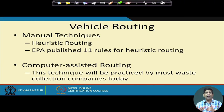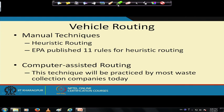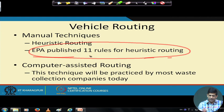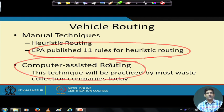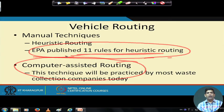In terms of vehicle routing, there is a manual way — heuristic routing. The US EPA published 11 rules for heuristic routing covering how trucks should move around. Over the last few decades, people have taken these guidelines and developed computer software, so nowadays nobody actually does manual routing. Computer-assisted software takes into account all 11 rules along with operations research, linear programming, and other concepts to produce better vehicle routing.